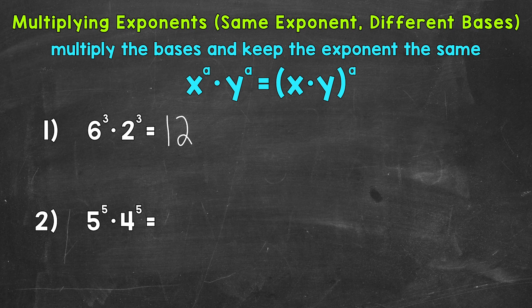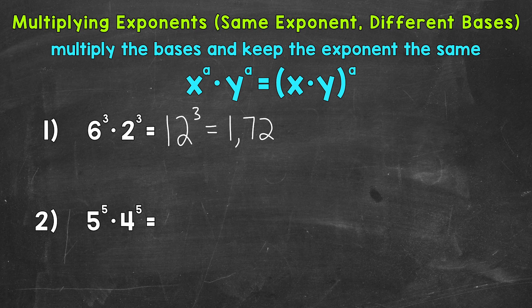And then the exponent of 3 stays the same. So we get 12 cubed. And 12 cubed equals 1728. So that is our solution for number 1.